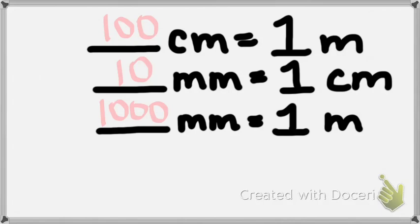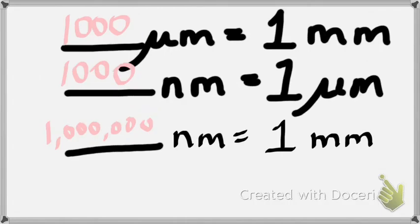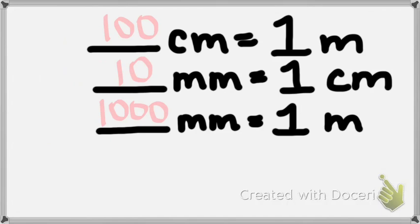One millimeter equals 1,000 micrometers. Do you know that 1 m is 100 cm? And 1 cm is 10 mm, so 1 m is 1,000 mm. Maybe we did this the very first day, which is why it's not in our lab manual.